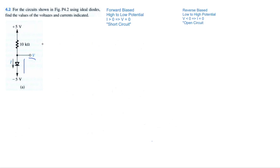Let's solve problem 4.2 by Sedra and Smith in their book Microelectronics Circuits, the eighth edition. In this problem we have several different circuit diagrams with an ideal diode and we want to determine the voltage and current in these circuits.